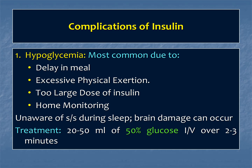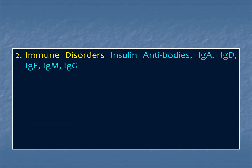In such cases we give 50% glucose, about 20 to 50 ml intravenously — slowly within 2 to 3 minutes. The second complication is immune system disorders. There may be specific antibodies — IgA, IgD, IgE, IgM, IgG — developed against insulin, causing non-functioning insulin due to the development of these antibodies.